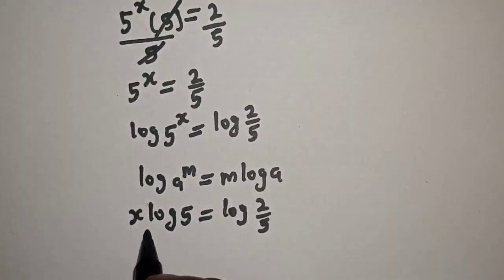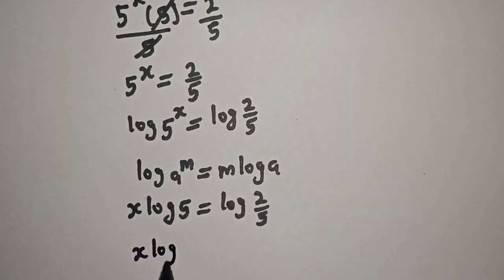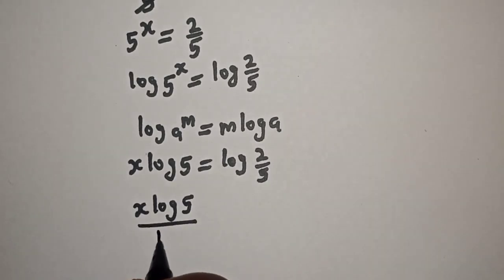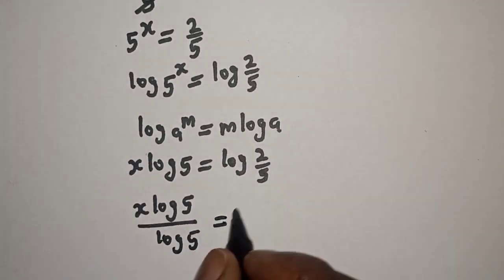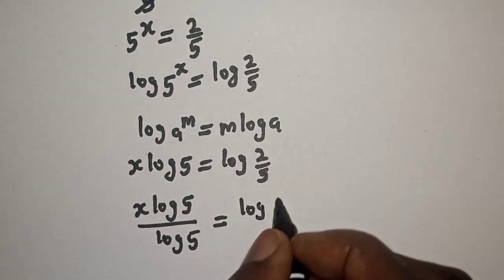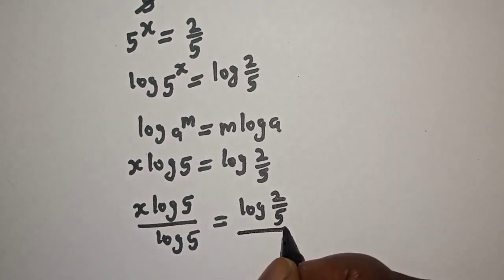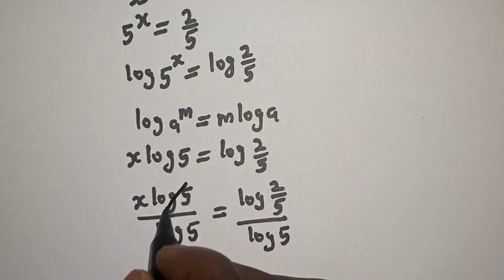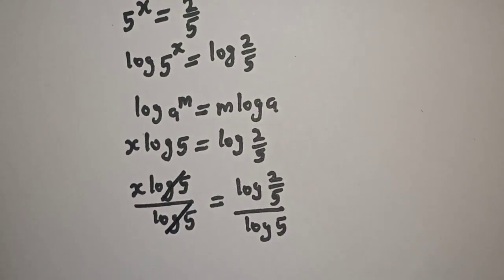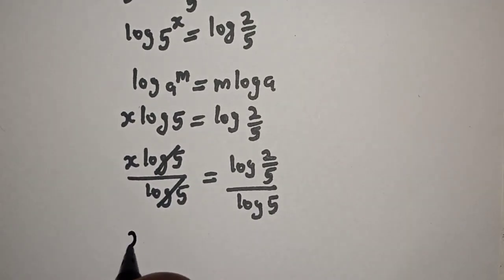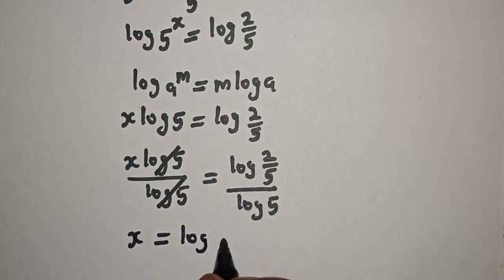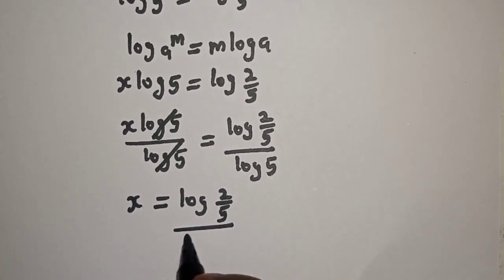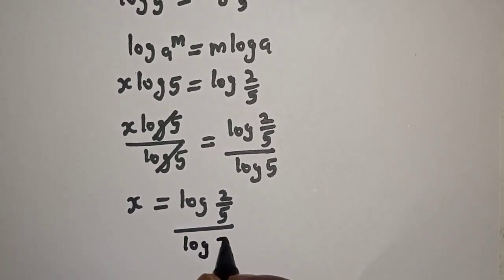Let's divide both sides by log 5. s·log 5 divided by log 5 is equal to log(2/5) divided by log 5. This cancels, so s is equal to log(2/5) divided by log 5.